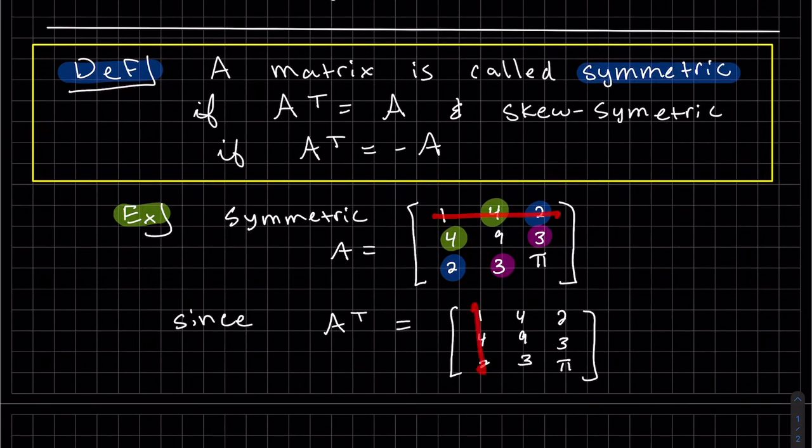So we can see 1, 4, 2, 1, 4, 2, 4, 9, 3, 4, 9, 3, 2, 3π, 2, 3π. So we take the transpose and we get the same back. But I also highlighted here what symmetric means. It's symmetric across the diagonal.